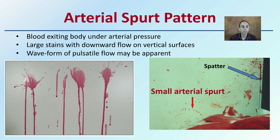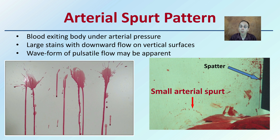The arterial spurt pattern is blood exiting the body under arterial pressure because the heart is producing that pressure. If a laceration occurs to an artery, an arterial spurt can result. These are large stains with downward flow on vertical surfaces, and a waveform from pulsation flow may be apparent. This extreme example shows what an arterial spurt looks like — possibly from a laceration to the neck region.